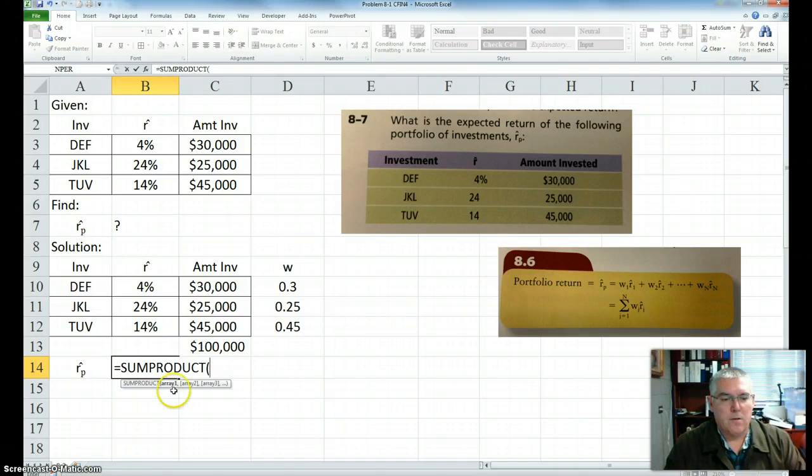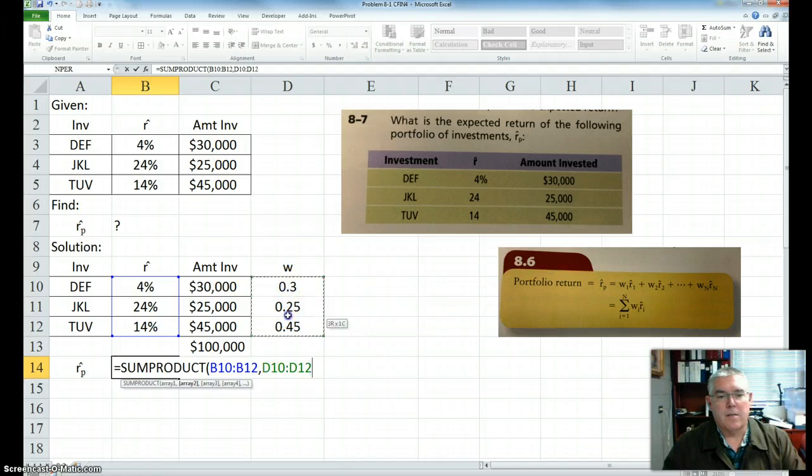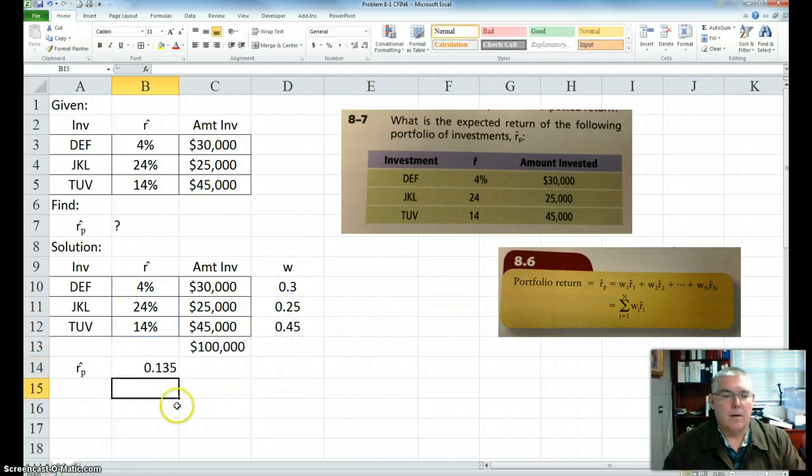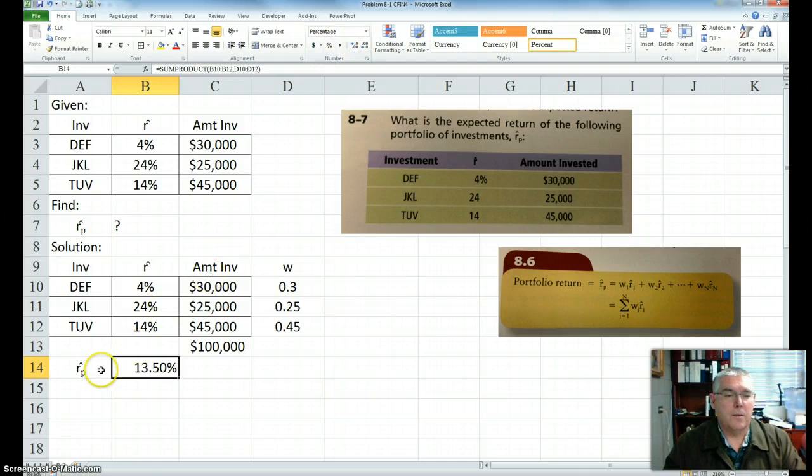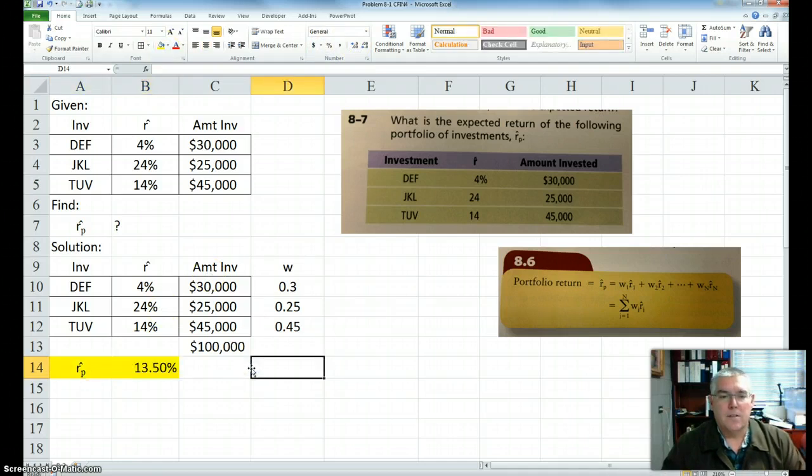And my first array is going to be these expected returns. And my second array is going to be the weights. Hit enter. And I'm going to make that percent. Take it out a couple places. And that's my answer. And it's as simple as that. That's all I've got to do. Okay, and that's it for that video. Thank you.